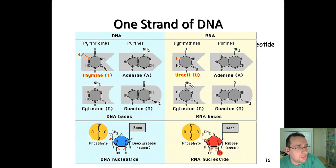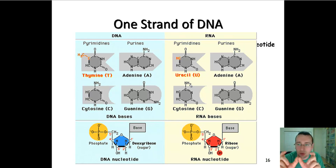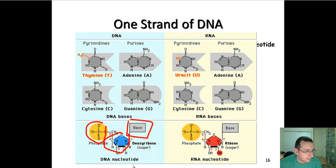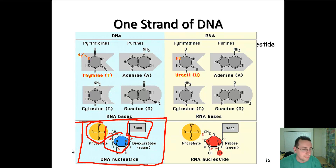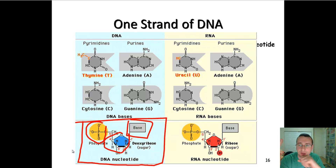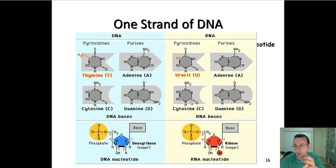You're also going to have nitrogenous bases, which is the third component of a nucleotide. Notice that the whole nucleotide is assembled by attaching the phosphate group, then the sugar, and then the base. So this is the building block of a nucleic acid — a nucleotide. The nucleotide has three parts: a phosphate group, the pentose sugar, and the nitrogenous bases.